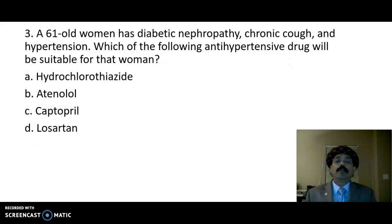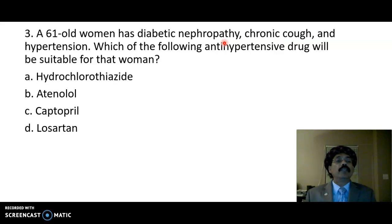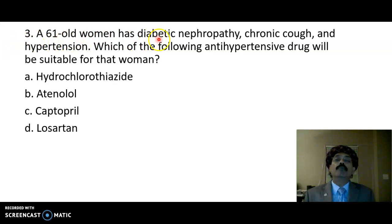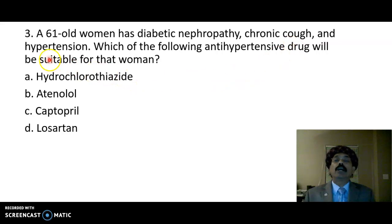Question 3: a 61-year-old woman has diabetic nephropathy. Diabetes is a systemic disease that may damage any organ system including the kidneys, eyes, and heart. She also has chronic cough, which may be a complication of bronchial asthma, chronic bronchitis, COPD, or other infection, and she has hypertension. Which antihypertensive drug will be suitable for that woman?